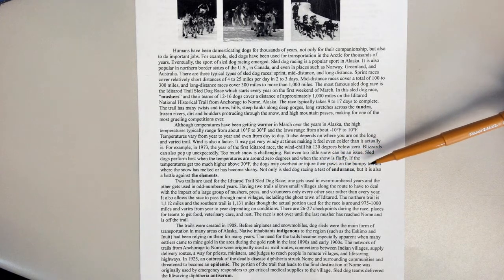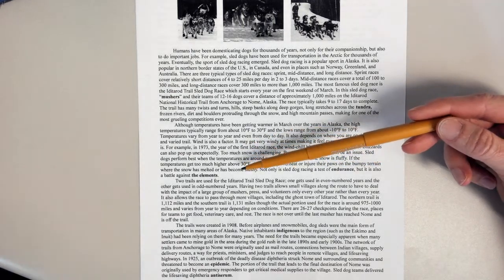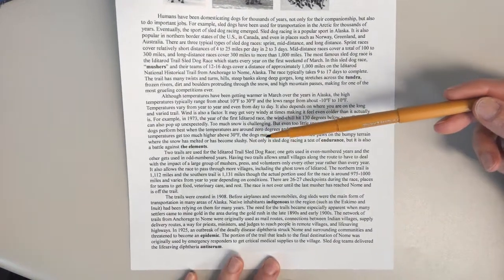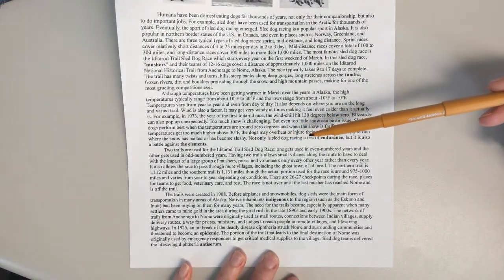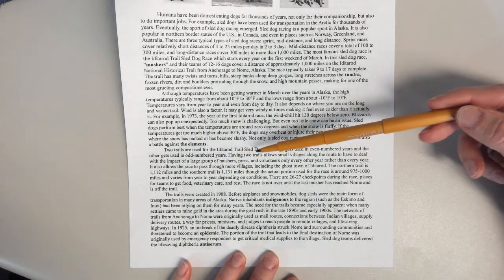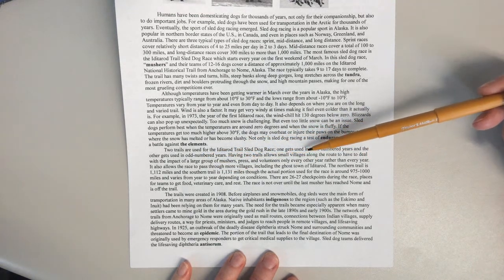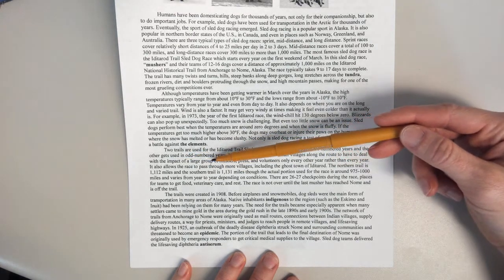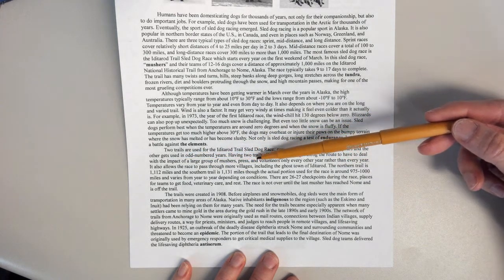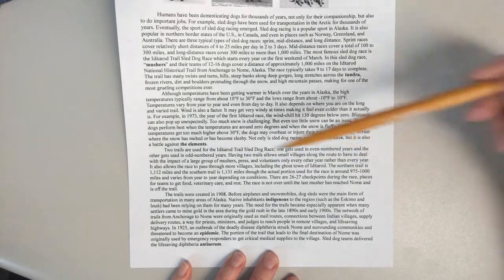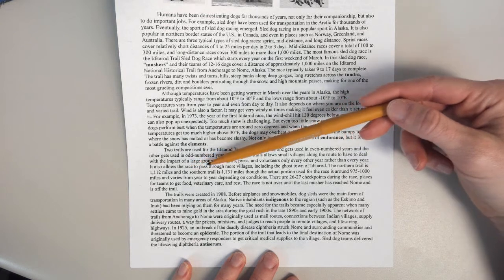Not only is sled dog racing a test of endurance, but it is also a battle against the elements. Two trails are used for the Iditarod Trail Sled Dog Race. One gets used in even-numbered years and the other gets used in odd-numbered years. Having two trails allows small villages along the route to have to deal with the impact of a large group of mushers, press, and volunteers only every other year rather than every year.